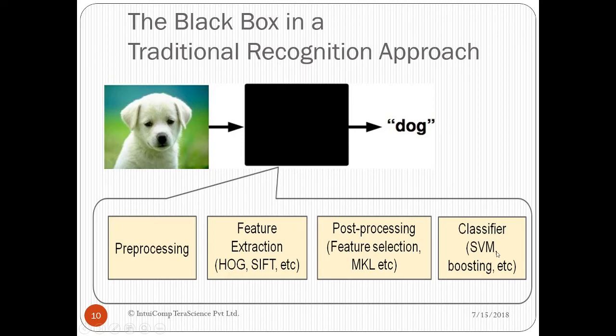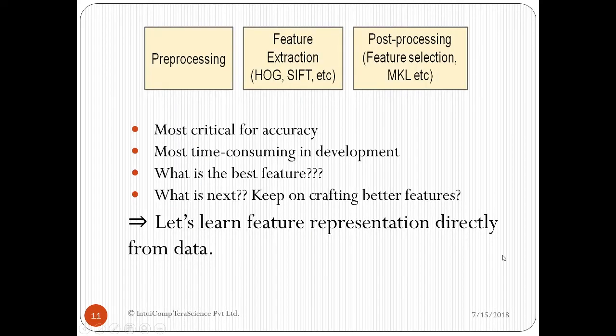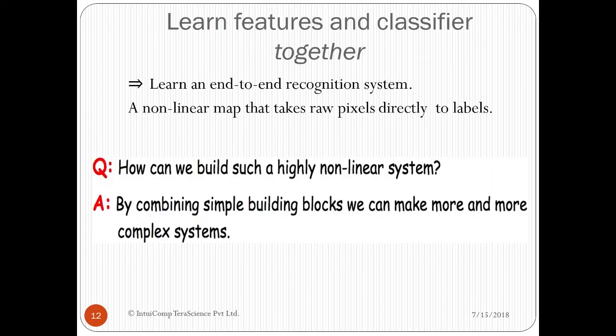So, selection of features is most critical for accuracy, also it is most time consuming in development. Then, the problem arises: what will be the best feature? What is next? Keep on crafting for best features. Solution is to learn feature representation directly from data. Learn features and classify together using deep networks. Learn an end-to-end recognition system, a non-linear map that takes raw pixels directly to the levels. How can we build such a highly non-linear system? By combining simple building blocks, we can make more and more complex systems.